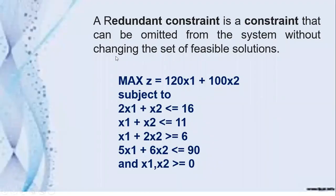What do you mean by a redundant constraint? A redundant constraint is a constraint that can be omitted from the system without changing the set of feasible solutions. Even though you remove that constraint, it does not change the feasible solution or workable solution. That is the meaning of redundant constraint.